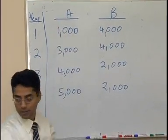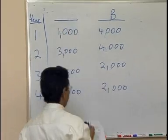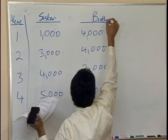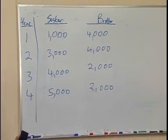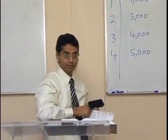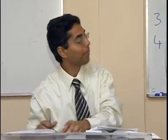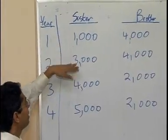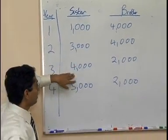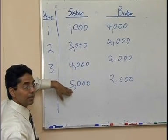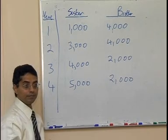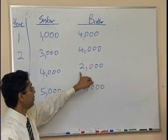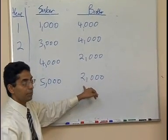Scenario A is your sister and scenario B is your brother. They both want to borrow money from you. Your sister says that at the end of year 1 she will give you $1,000 back; at the end of year 2, $3,000; at the end of year 3, $4,000; and at the end of year 4, $5,000. Your brother says he will give you $4,000 back in year 1, $4,000 in year 2, $2,000 in year 3, and $2,000 in year 4.